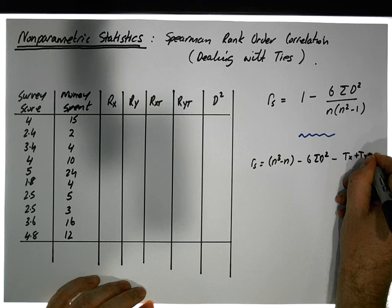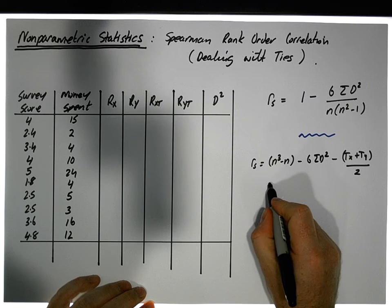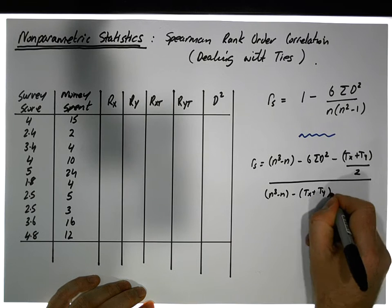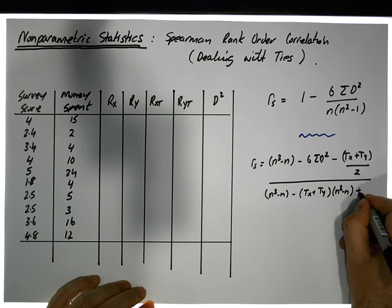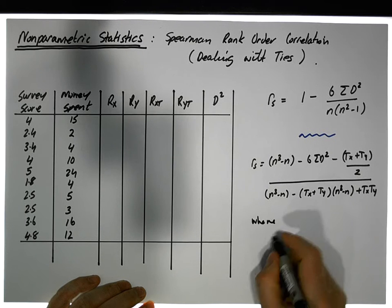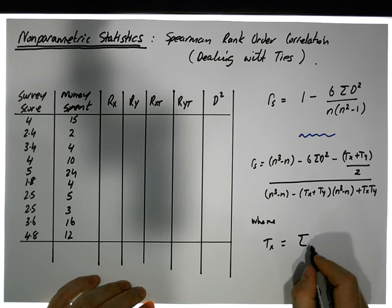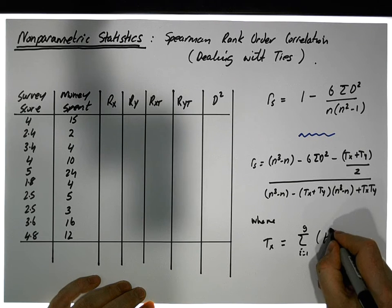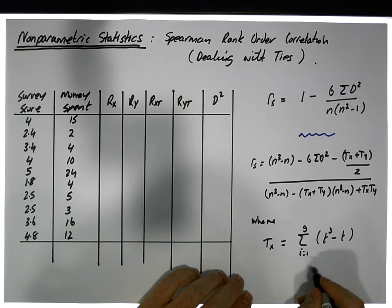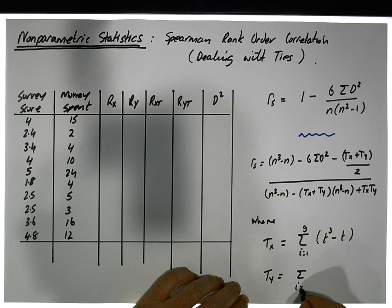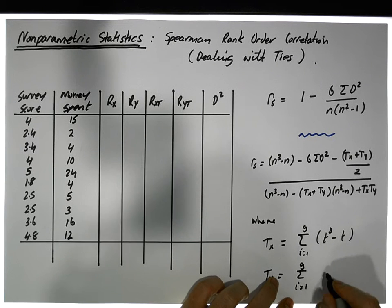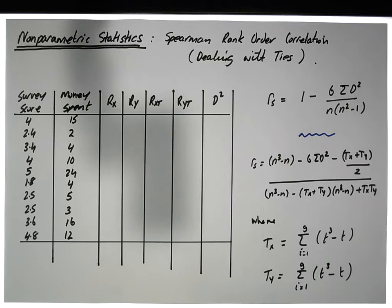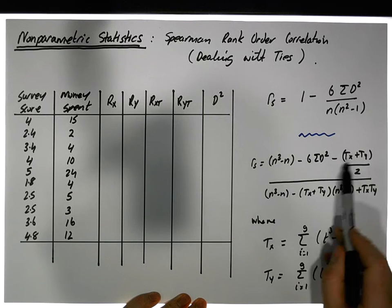The full formula is: r_s = (n³ − n − 6·Σd² − (T_x + T_y)) / 2, all divided by √((n³ − n − (T_x + T_y)) · (n³ − n + T_x · T_y)). The correction terms T_x and T_y are computed for each group of tied rankings as: for each group i from 1 to the number of tied groups, T = (number of values in the group)³ − (number of values in the group). It looks vicious but it's only subtraction, addition, division, and a bit of cubing.